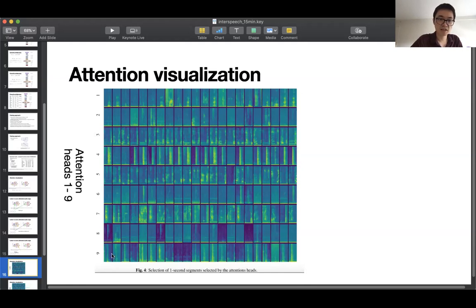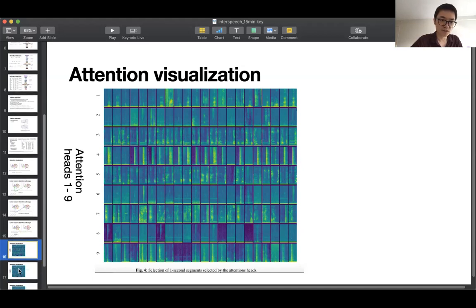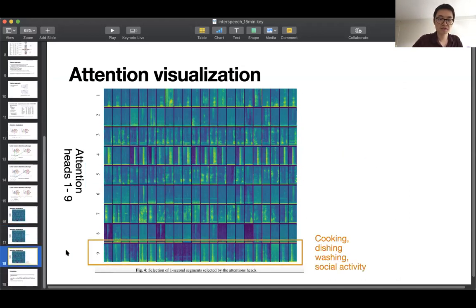And attention head nine, for example, is from sudden hitting sound or like loading sound. So that's why there's a sharp peak in the middle. And there are some other distinct kinds of tasks that you can see that were discovered by different other attention heads. So we just looked at the three and five, which are from watching TV, as well as nine, which is cooking, dishwashing and social activity.